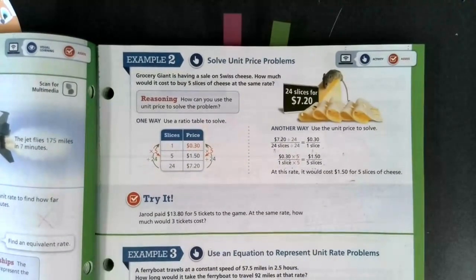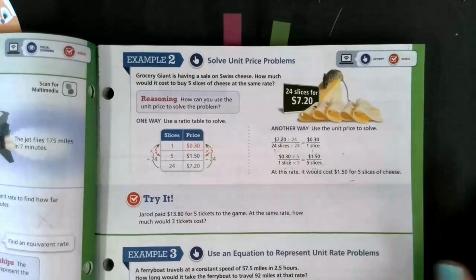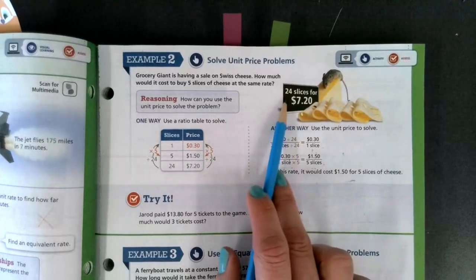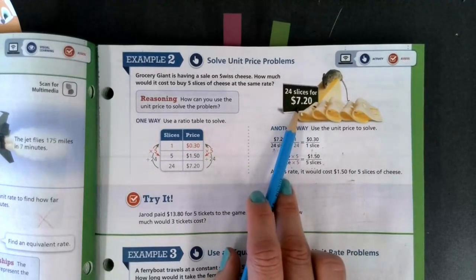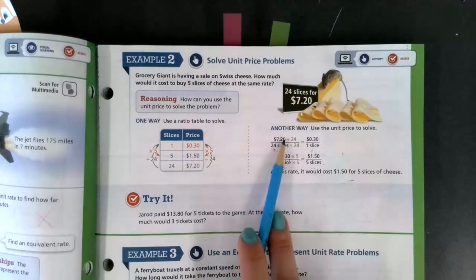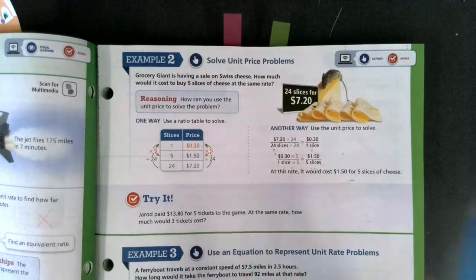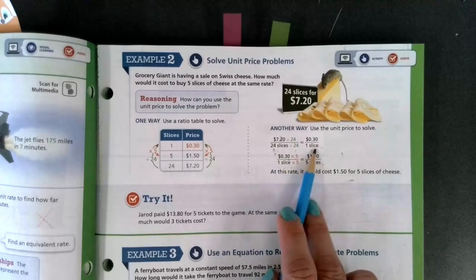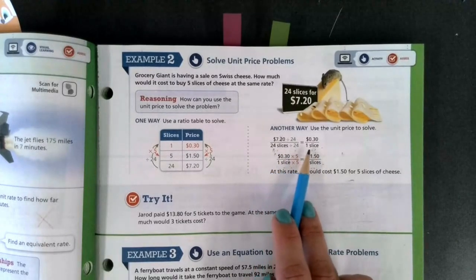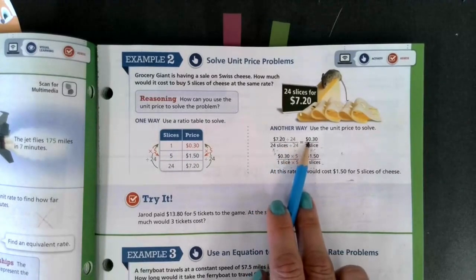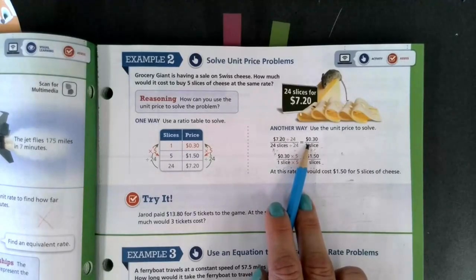Using our unit rates to help us solve price problems. So here we have Grocery Giant is having a sale on Swiss cheese. How much would it cost to buy five slices of cheese at the same rate? So if I look, I know you can buy 24 slices for $7.20. We can use that rate to help us solve our unit rate to find the price per one slice. If I do that, I'm setting it up equal to one slice. 24 divided by 24 will get me to one. So I'm also taking $7.20 divided by 24, and I find our unit price of 30 cents per slice.